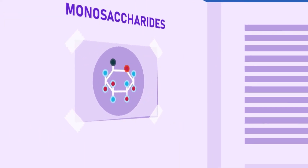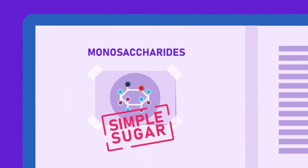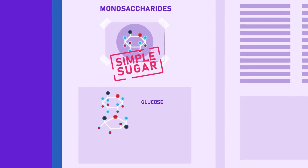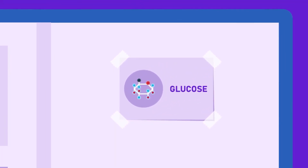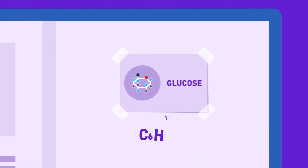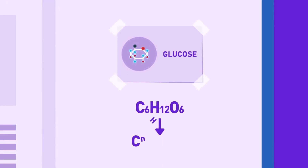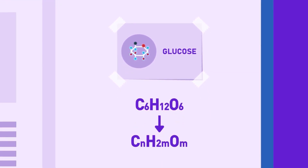Monosaccharides have a simple chemical composition and therefore are known as simple sugars. Examples of them are glucose, fructose and galactose. The sugar glucose is one of the simplest forms of sugars and has the chemical formula C6H12O6. The generalised formula for carbohydrates is CN H2N ON. In the case of glucose, N and M is equal to 6.